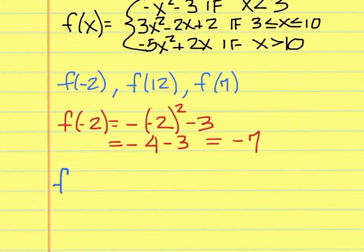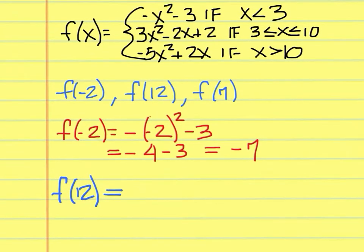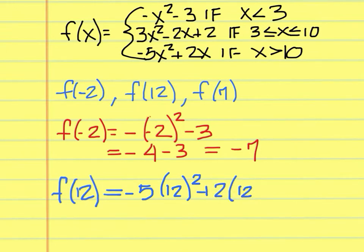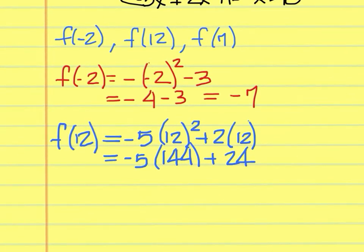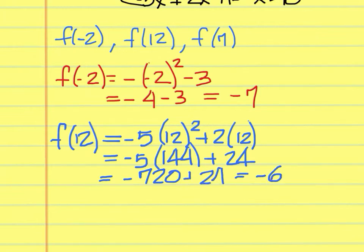The next one is f of 12. We use the third function because 12 is greater than 10. So negative 5 times 12 squared plus 2 times 12, that's negative 5 times 144, and then plus 24. Negative 5 times 144 is negative 720. Adding 24 gives negative 696.